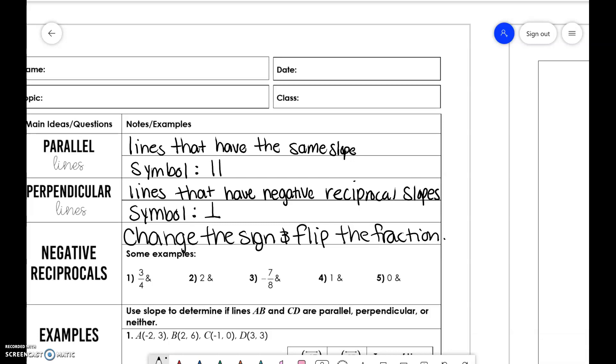For example, if we do 3 over 4, we change the sign so it's now negative and flip the fraction to 4 over 3. 2 is a fraction, we write it over 1, so that's negative 1 half. Now 7 over 8, it is negative, so now it's positive and flip the fraction to 8 over 7.